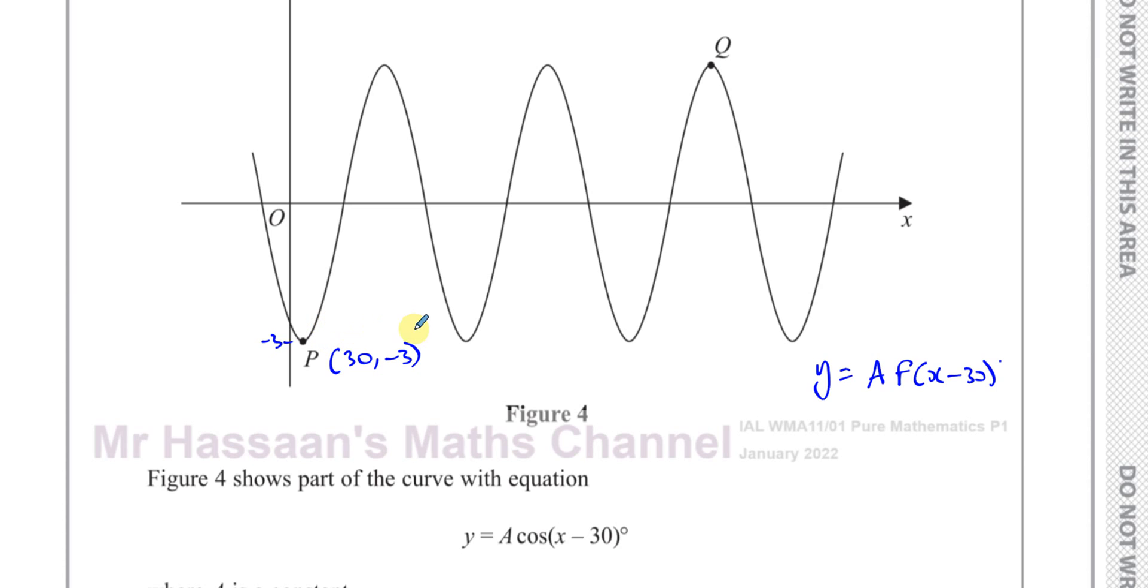Now for this particular curve, the minimum value is negative 3. That means the maximum value is going to be 3. So we can see that a has got something to do with 3. However, is it positive 3 or negative 3?